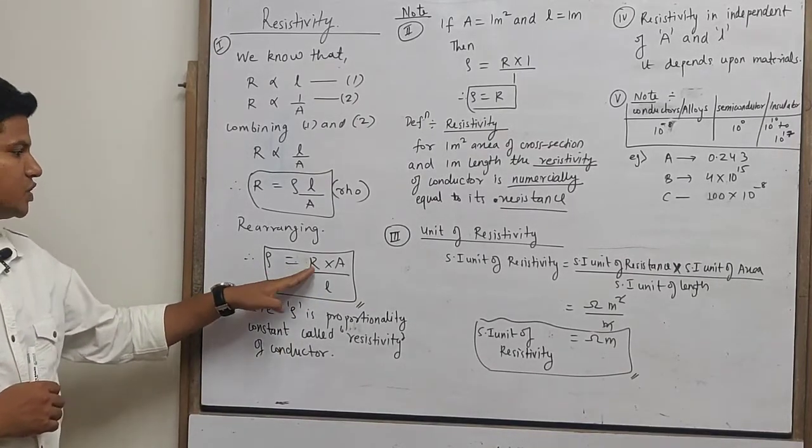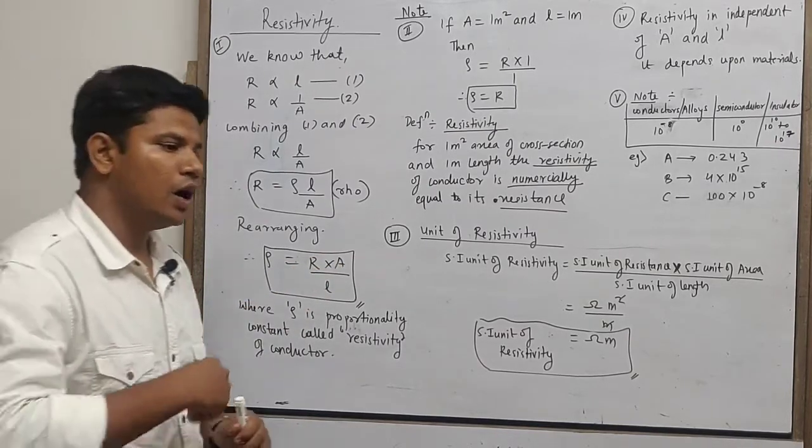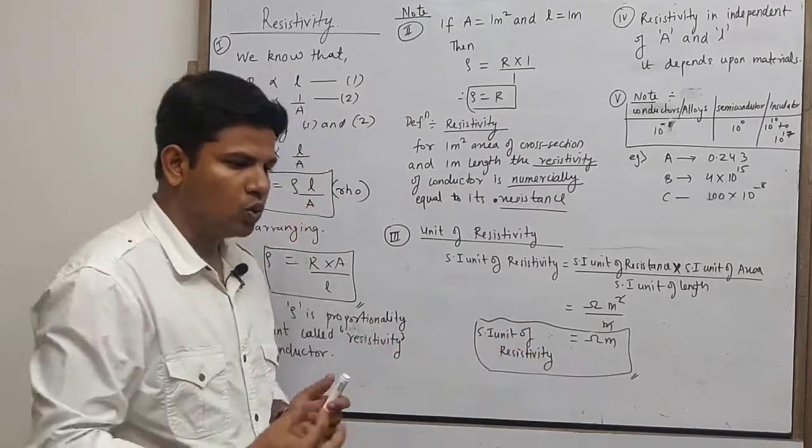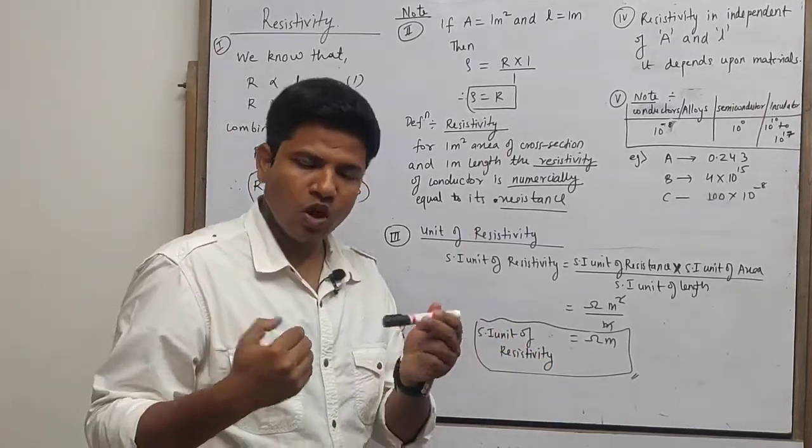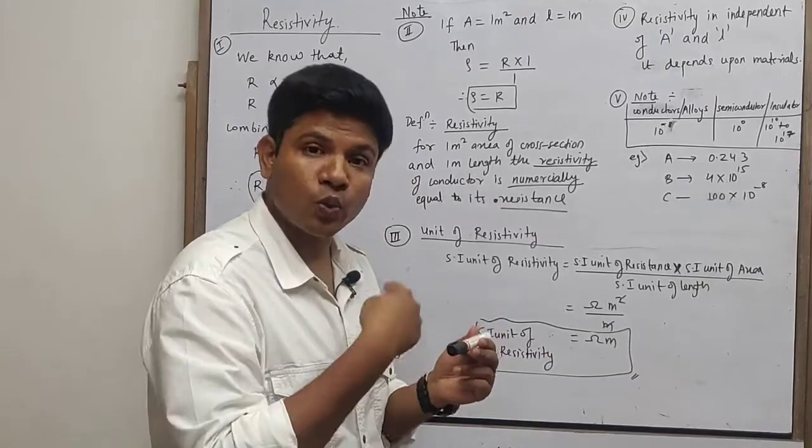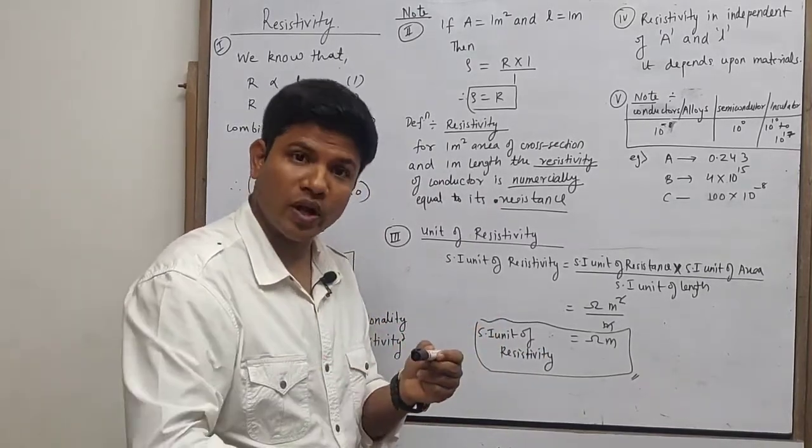So resistivity is equal to resistance into area upon length. Now, if I take a wire whose length is 1 meter and area of cross section is 1 meter square, length is 1 meter, area of cross section is 1 meter square.